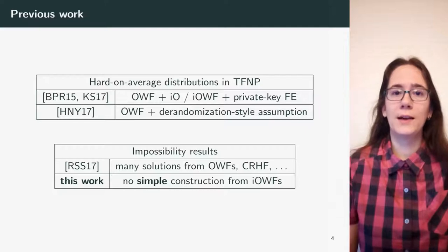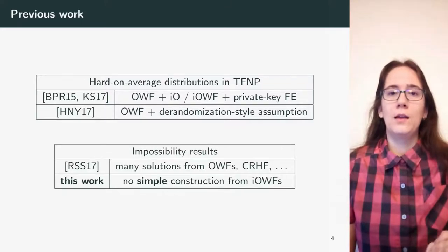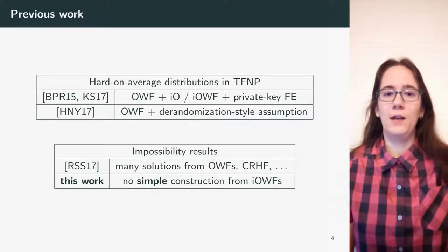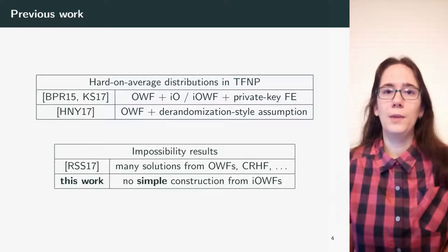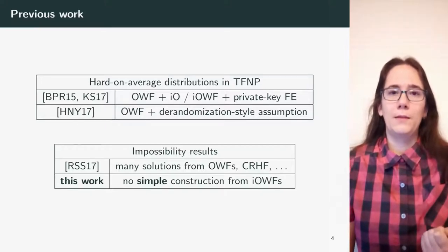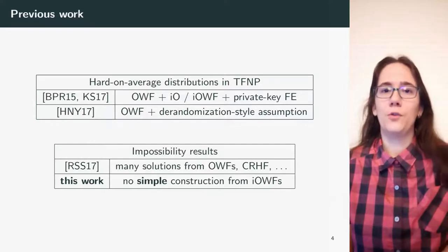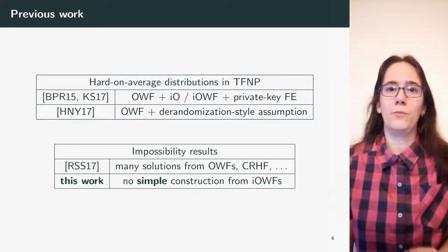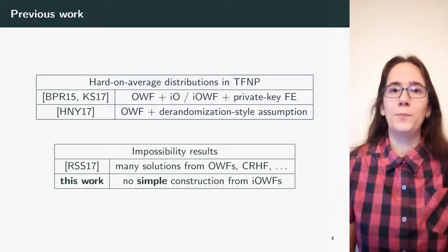We were interested in basing the hardness just on the assumption of one-way functions or injective one-way functions. On the other hand, there is also an impossibility result. It was proven by Rosen, Segev, and Shamir in 2017 that if you are able to construct a hard-on-average distribution in TFNP from one-way functions, then the instance must have many solutions. But note that their result holds also for collision-resistant hash functions, and for those the construction is known. So this does not really rule out the possibility of constructing a hard-on-average distribution from one-way functions. In our work, we rule out the possibility of such a construction, at least for simple constructions.